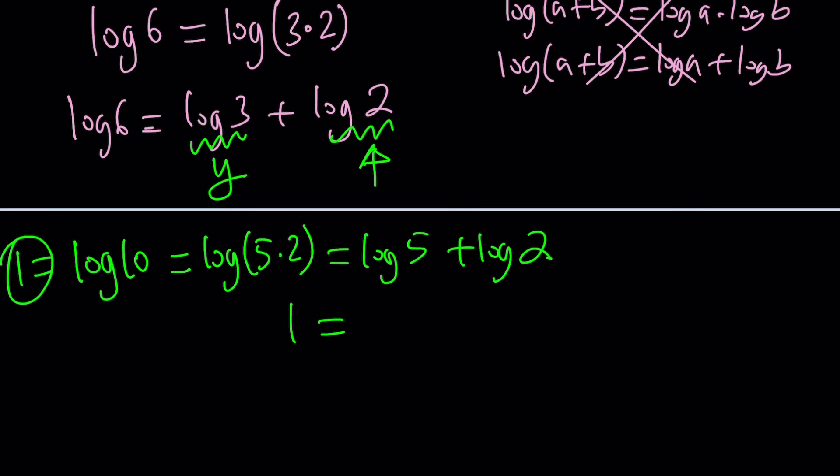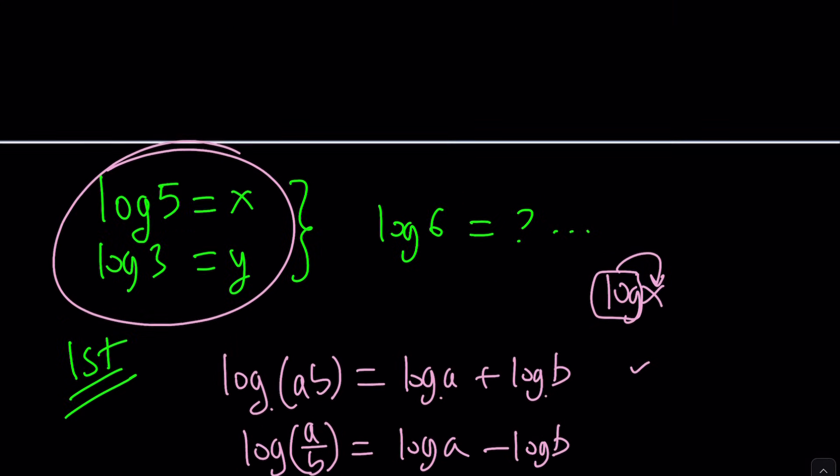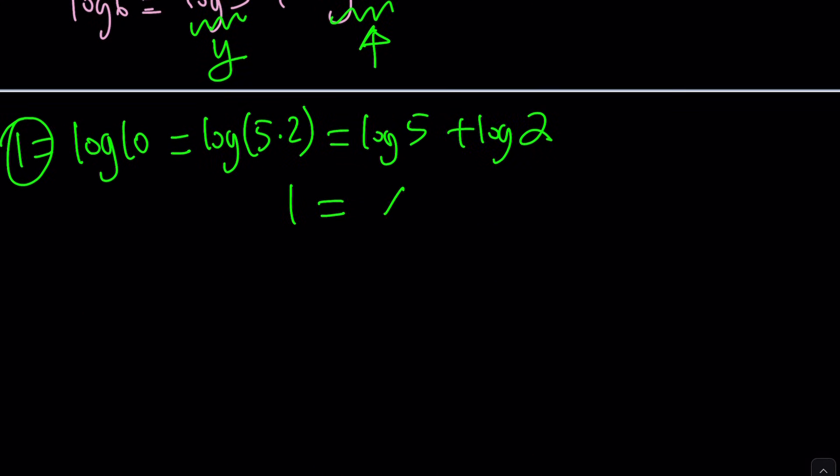So in other words, log ten, which is one, because it's log ten base ten, think about it, ten to the power one equals ten. So this can be written as log five times two, and that is log five plus log two. So this is one, one equals, what is log five? Yes, it's x. So replace it with x and plus log two. From here, you can solve for log two, which is one minus x. Awesome. I also got log two.